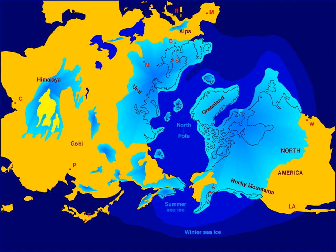During the glacial periods, the present hydrologic system was completely interrupted throughout large areas of the world and was considerably modified in others. Due to the volume of ice on land, sea level was about 120 meters lower than present.